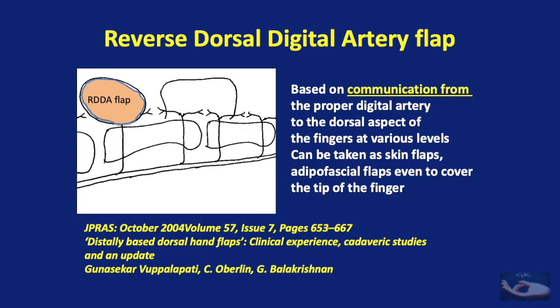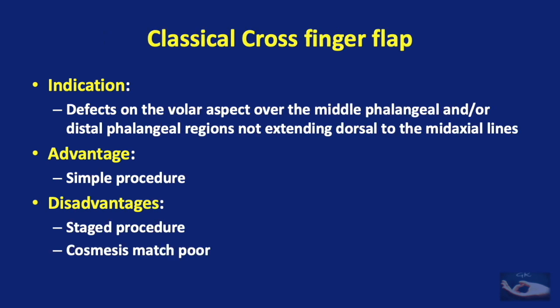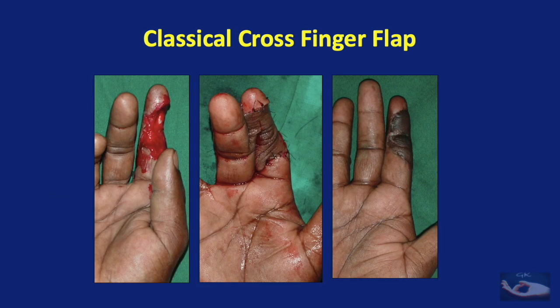Similarly, the reverse dorsal digital artery (RDDA) flap, based on communication from the proper digital artery, can be raised either as adipofascial flaps or as skin flaps, ideal for defects on the dorsal aspect of the fingers from the middle of the proximal phalanx to a little distally. The classical cross finger flap is indicated for coverage of defects on the volar aspect of the middle or distal phalangeal regions, not extending dorsal to the mid-axial lines.